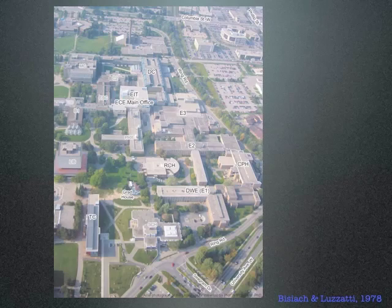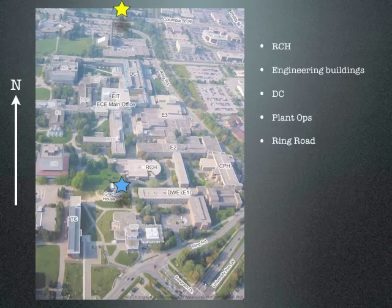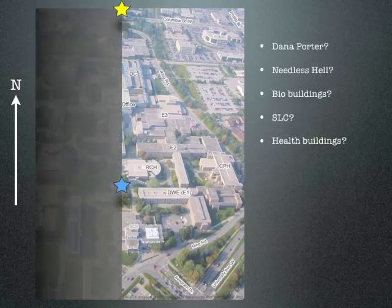There's an interesting test that draws out this phenomenon. The original test was done in Italy, but to illustrate, here's a map of our Humboldt campus. If we ask a patient to visualize starting at Grad House and describe all objects on the way to optometry at the north end of campus, the patient would describe RCH, the engineering building, DC library, the Plantops facility, crossing Ring Road — basically everything on the right side. They would miss Dana Porter, the Bio buildings, and SLC. It's as if the left half of the map ceases to exist.